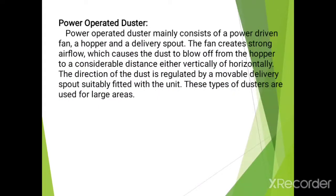The next type is the power operator duster. Power operator dusters mainly consist of a power-driven fan, a hopper, and a delivery spout. The fan creates strong airflow which causes the dust to blow from the hopper to a considerable distance, either vertically or horizontally. The direction of the dust is regulated by a movable delivery spout fitted with the unit. This type of duster is used for large areas. This session is finished here. Thank you for listening. Bye.